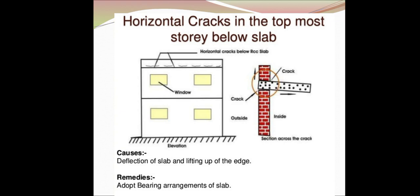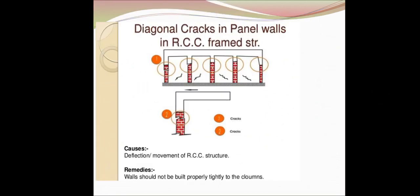The cause of horizontal cracks is deflection of the slab and lifting up of ends. The remedy is an appropriate bearing arrangement of slabs. Diagonal cracks in panel walls in RCC frame structures are caused by deflection or movement of the RCC structure. The remedy is that the wall should not be built tightly to the columns.